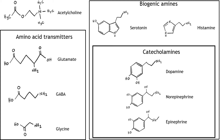The biogenic amines include serotonin and histamine, and the subgroup the catecholamines: dopamine, norepinephrine, and epinephrine. Acetylcholine does not fit into either division, but is still considered a small molecule neurotransmitter.